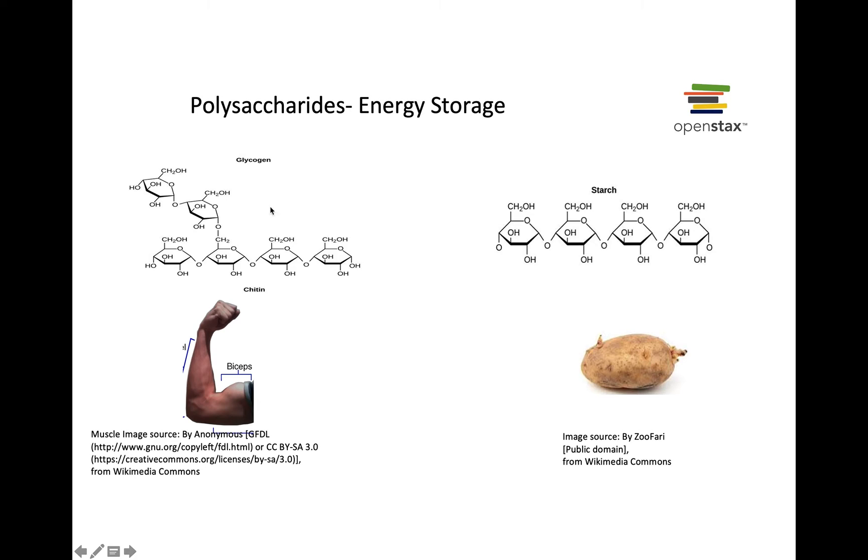The only difference between starch and glycogen is that glycogen at some point it has branches, but for the most part they are long chains of carbohydrates and the individual unit is glucose. So these are all glucose molecules that have been attached together through a glycosidic bond.